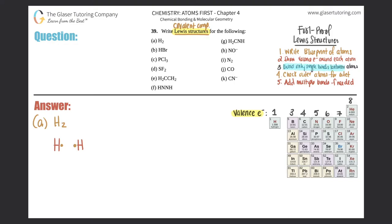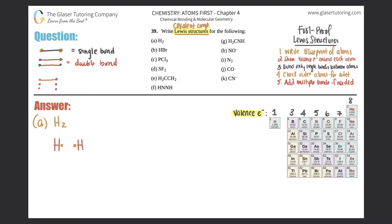Step three: start binding, but only try to link up single bonds first, then do a check. Two electrons always come together to form a single bond. If you need a double bond, that's four electrons total. And a triple bond uses three electrons from each atom - six electrons total.